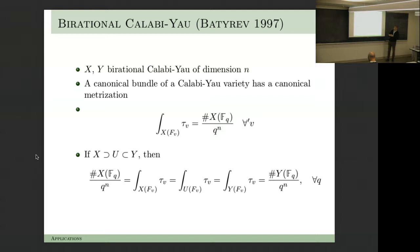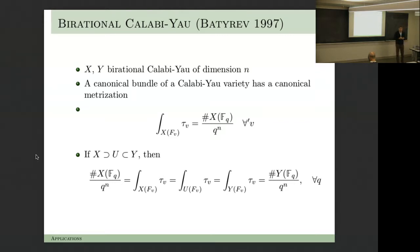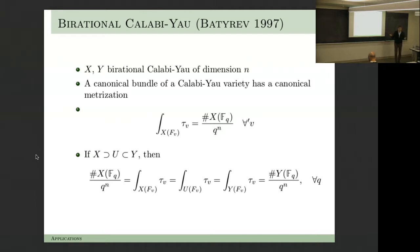If you have it for all q, the Weil conjectures tell you they're equal. And in fact, this became also the origin for what's now known as motivic integration, introduced by Kontsevich, who realized that the p-adic numbers are not relevant—you just look at Laurent power series and do the same thing. It's a big field. There are connections. I just wanted to show how these things evolve.